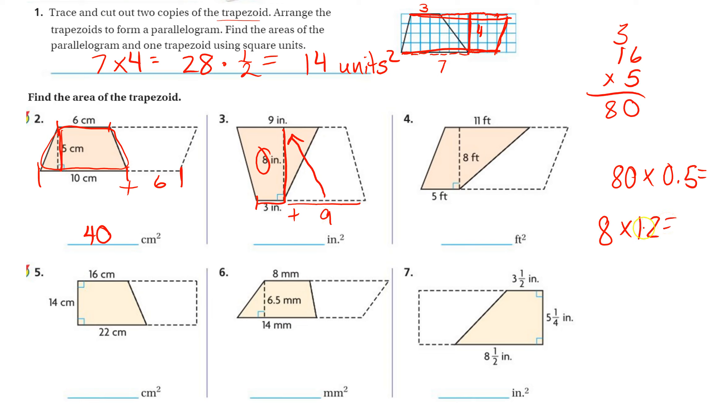If you know your math facts, you know that 8 times 12 is 96, and then you're just going to take that 96, and now you need half of it to find the trapezoid.